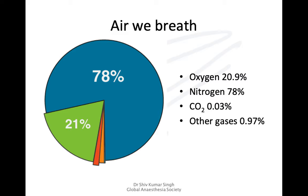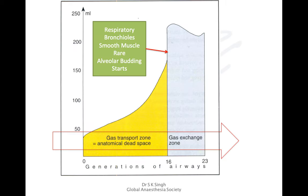Oxygen fulfills its metabolic role at the mitochondrial level, and the inspired oxygen tension represents the highest value in the ascending sequence of oxygen tension concerned with delivering oxygen to the mitochondria. This is explained by the oxygen cascade, which I'll describe in a minute.